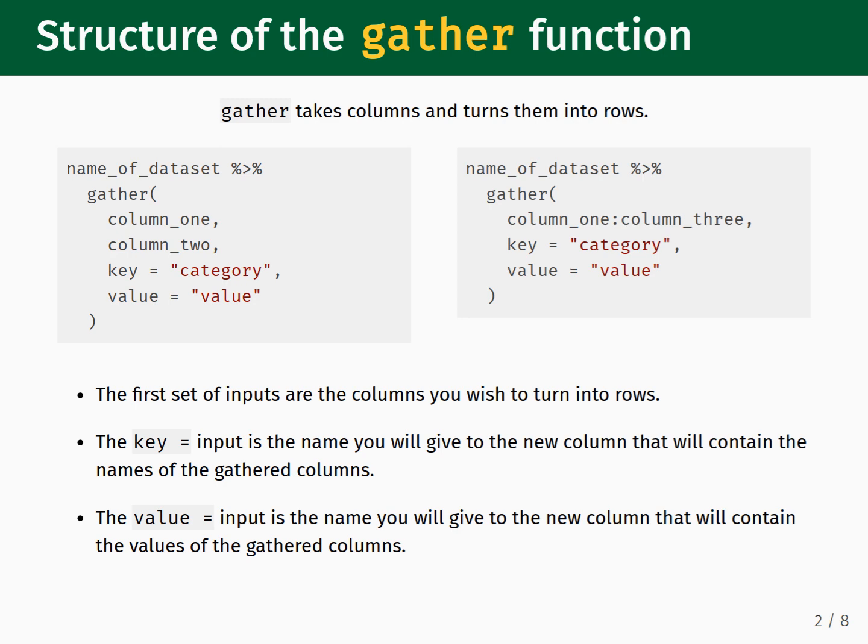The structure of the gather function is as follows. The dataset gets piped into the function, and then you list the names of the columns that you wish to gather into rows. If you list the column names individually, then each column name needs to be separated by a comma. This is what you see in the gray code block on the left with column_one, column_two.